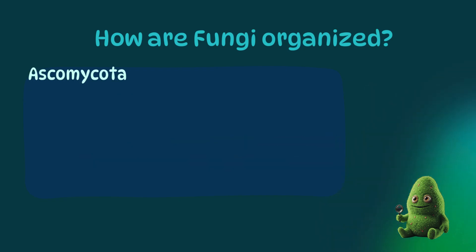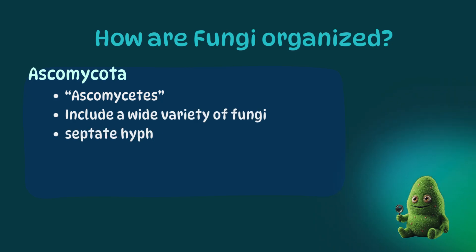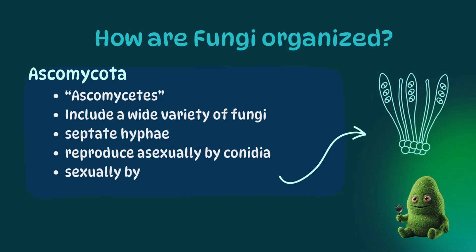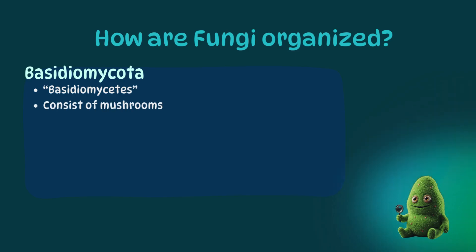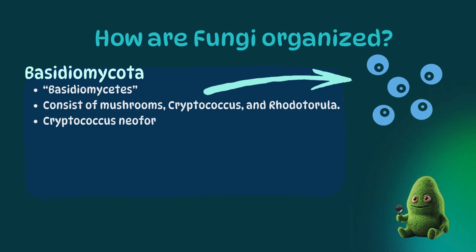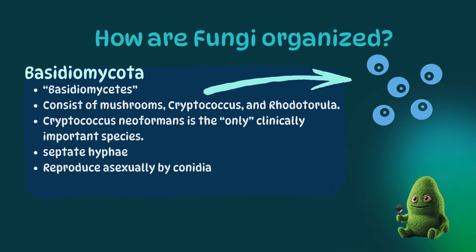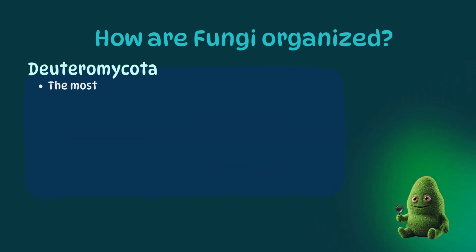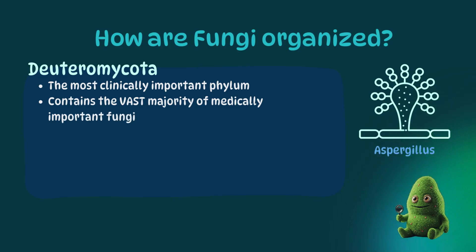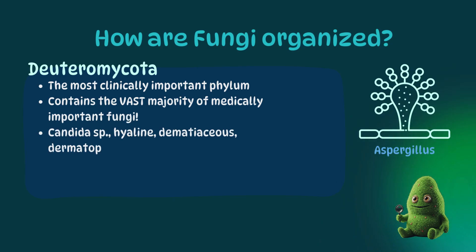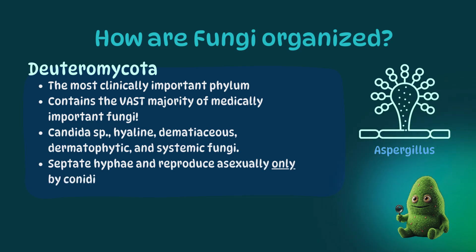The Ascomycota include a wide variety of fungi with septate hyphae. They reproduce asexually by conidia and sexually by ascospores in sacs called asci. The Basidiomycota is a group that is barely relevant to medical mycology, with Cryptococcus being the only clinically significant member. The group includes mushrooms and a vibrantly colored yeast called Rhodotorula. They reproduce asexually by conidia and sexually by basidiospores. Deuteromycota is last and definitely not least — this is the big group that includes the vast majority of clinically important fungi: Candida species, hyaline and dematiaceous fungi, dermatophytes, and systemic fungi. They reproduce asexually only by conidia.